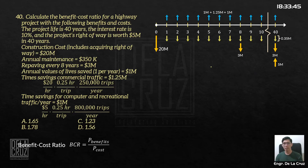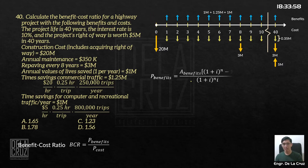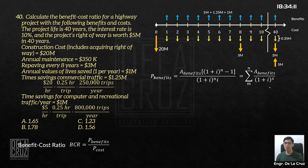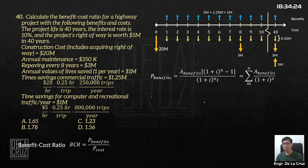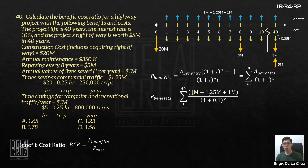Converting the benefits: since all benefits are annual, we use the annuity/summation formula — sum of (annual benefits) over (1 + i)^x from year 1 to year 40. Annual benefits = 1 million + 1.25 million + 1 million = 3.25 million. With interest 10% (0.1), evaluating from year 1 to 40, that gives 31.78 million.